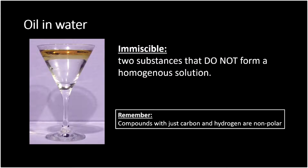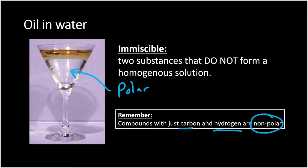Why is oil and water immiscible? It has to do with our like-dissolves-like rule. Water is polar. Oil is made of mostly carbon and hydrogen, and if things are made of just carbon and hydrogen, they're nonpolar. So remember: if you see OH, you know it's polar; if you see just carbon and hydrogen, you know it's nonpolar. Water would rather hang out with other charged water molecules where it can have hydrogen bonding. If water tries to creep into the oil, it won't have anything to hydrogen bond to — making it less stable — so they end up separating out.